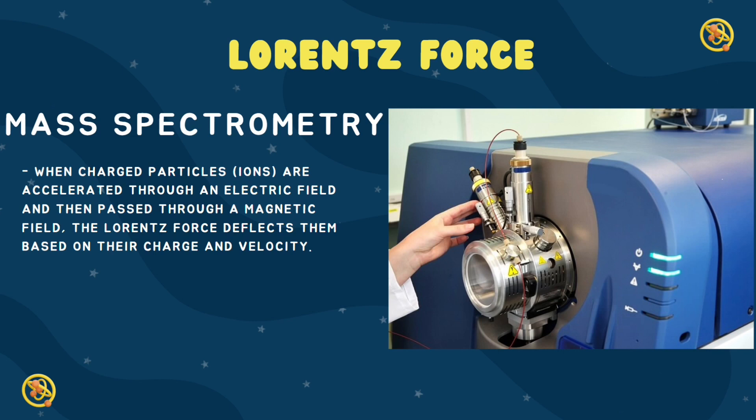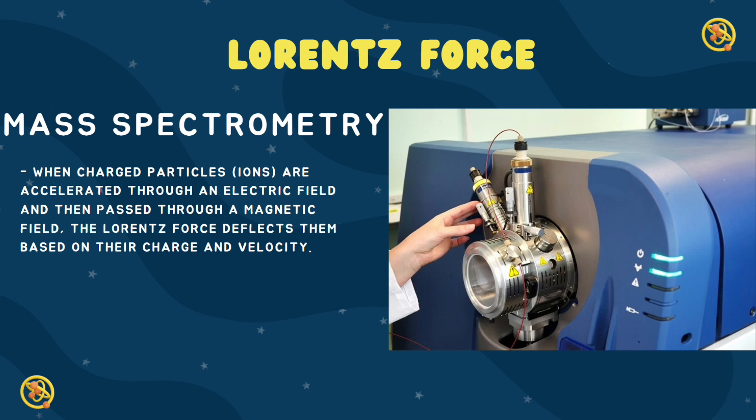Mass spectrometry: when charged particles, ions, are accelerated through an electric field and then passed through a magnetic field, the Lorentz force deflects them based on their charge and velocity.